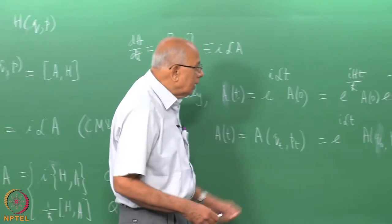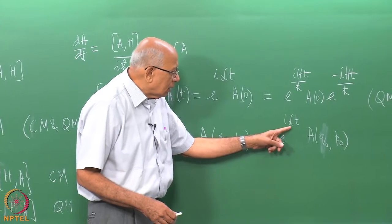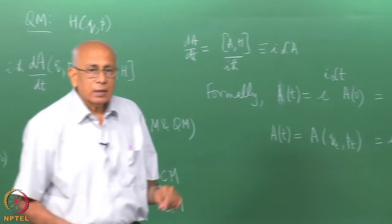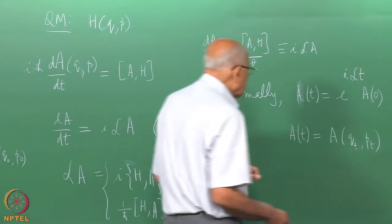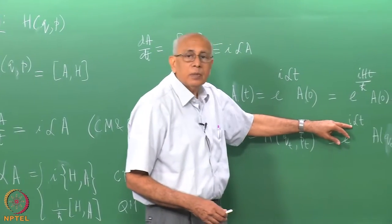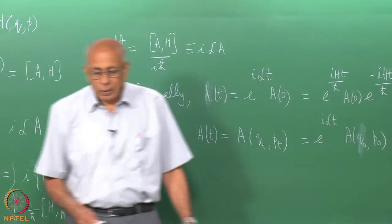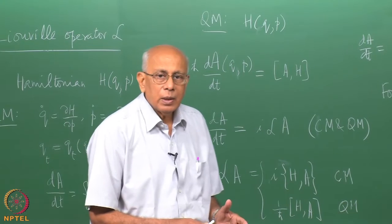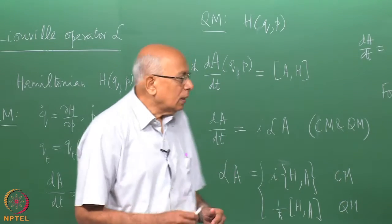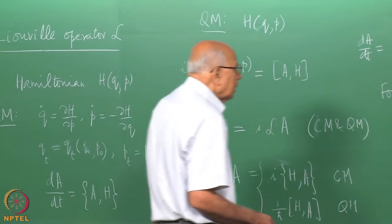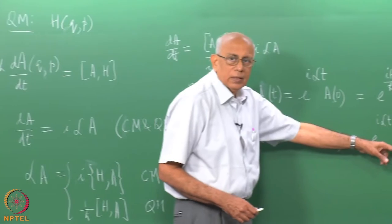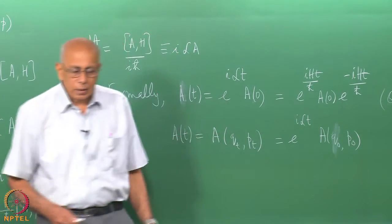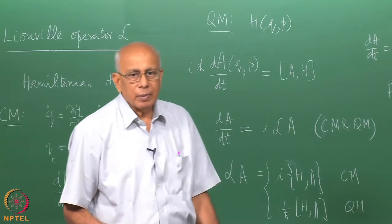The properties we need are that L is a Hermitian operator. Once we establish that, the exponential of i times a Hermitian operator is a unitary operator. While we are familiar with Hermitian Hamiltonian giving unitary evolution in quantum mechanics, the same is true in classical mechanics in this language. Let me establish that L is a Hermitian operator both in classical and quantum mechanics.